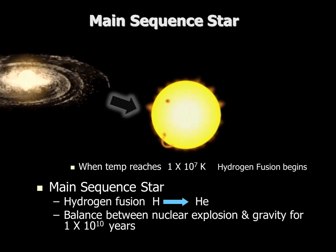But back to the star — down in the central region, the protostar may go on to form a main-sequence star. When temperatures reach 1×10⁷, or 10 million Kelvin, that's the temperature where hydrogen fusion begins and a main-sequence star is born. This creates tremendous amounts of energy, and the outward force of the nuclear explosions is balanced by the intense pressure of gravity. This balance may keep the star active for 10 billion years.